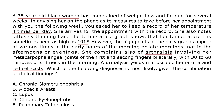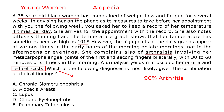She is a young woman with a demographic that has a high incidence of lupus. She also describes alopecia and joint involvement — remember, 90% of lupus patients have arthritis. Additionally, she has red cell casts, which are very characteristic of nephritis. So the diagnosis is lupus until proven otherwise.